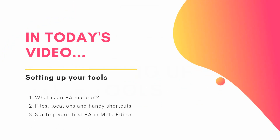In today's video we're looking at setting up your tools. I'm going to tell you what an EA is made of — really basic stuff, but important if you're new to this. We'll talk about the file locations for MetaTrader 4, show you some handy shortcuts, and then we're going to start your first EA in MetaEditor using the template. We're not going to code today — just get familiar with it before we start coding in the next lesson.